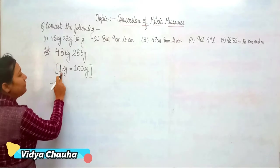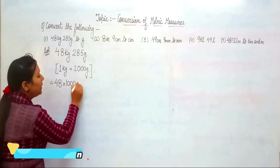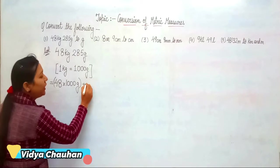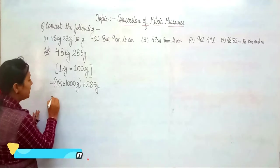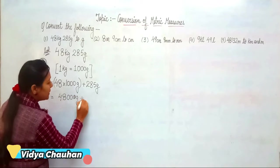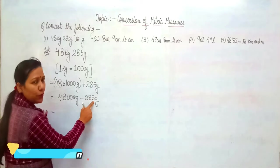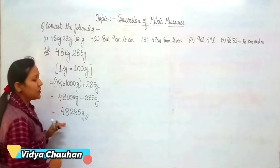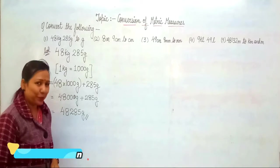So: 48 kg × 1000 = 48,000 grams. Plus we also have 285 grams, so that gives us 48,000 + 285 = 48,285 grams. This is how you convert from kg and grams into the gram form.